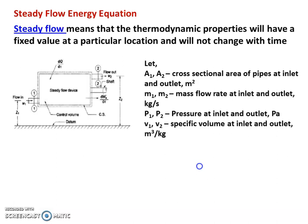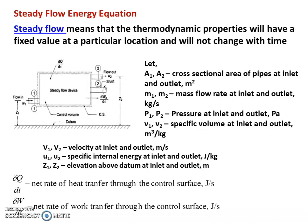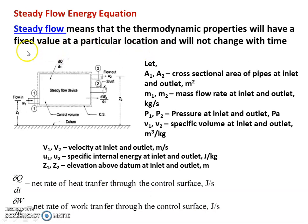Next, we are going to derive the steady flow energy equation. Steady flow means that thermodynamic properties will have a fixed value at a particular location and will not change with time. In fluid mechanics, properties are constant with respect to time — that is what steady flow means. At any location, properties are constant with respect to time.